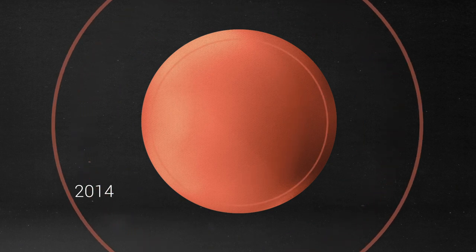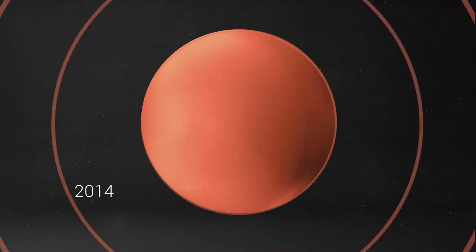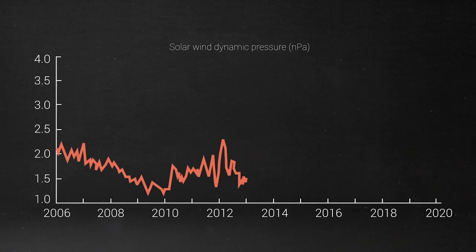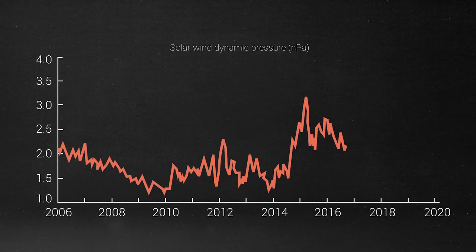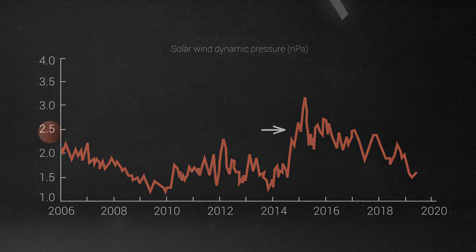For example, starting in 2014, there was a huge and prolonged increase in solar wind pressure. NASA spacecraft near Earth detected solar wind gusting 50% harder than previous years. After travelling outward for a year, solar wind hit the edge of the heliosphere.